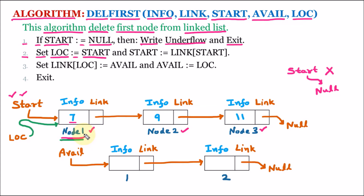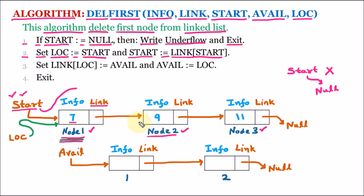So location is now pointing to node 1, and start is going to be modified. The new value of start will be equal to the link of start. We know that start is pointing to node 1, and node 1's link part contains the address of node 2. So we are modifying start with link of start, meaning start is now pointing to node 2 and the previous value of start is updated.